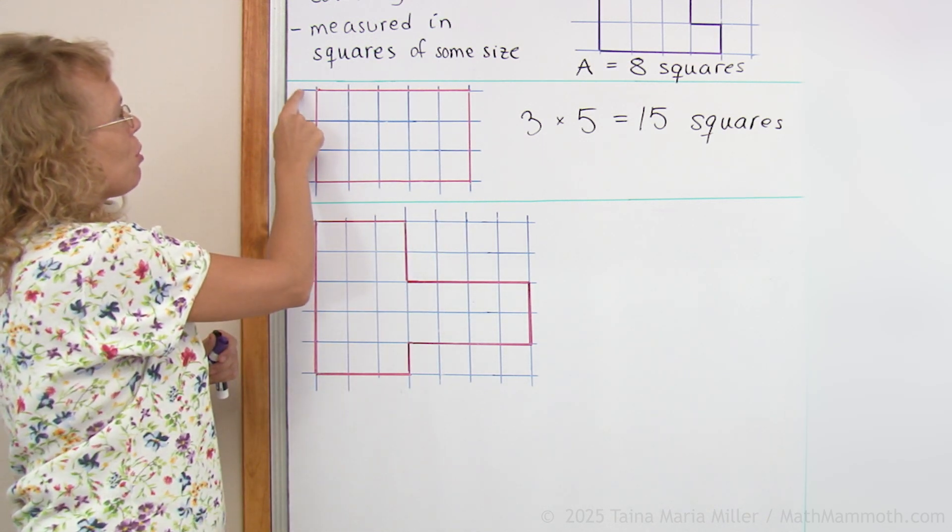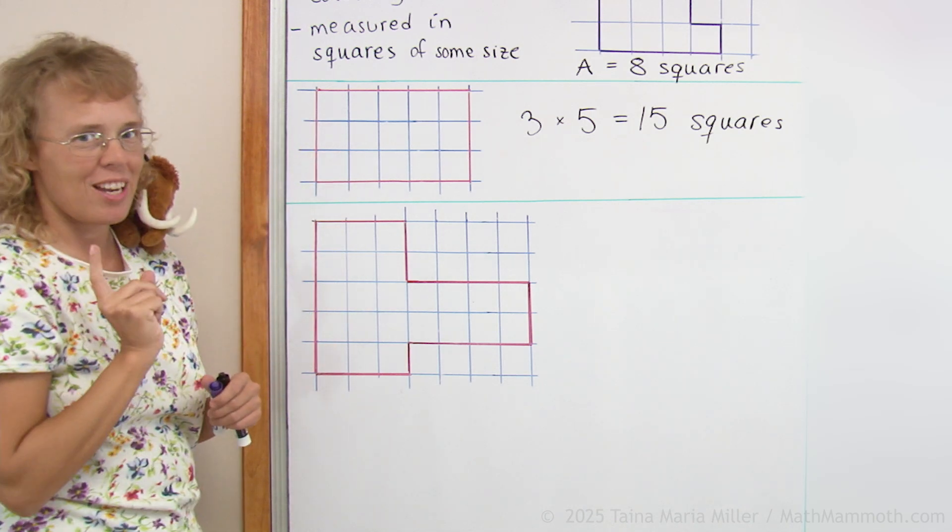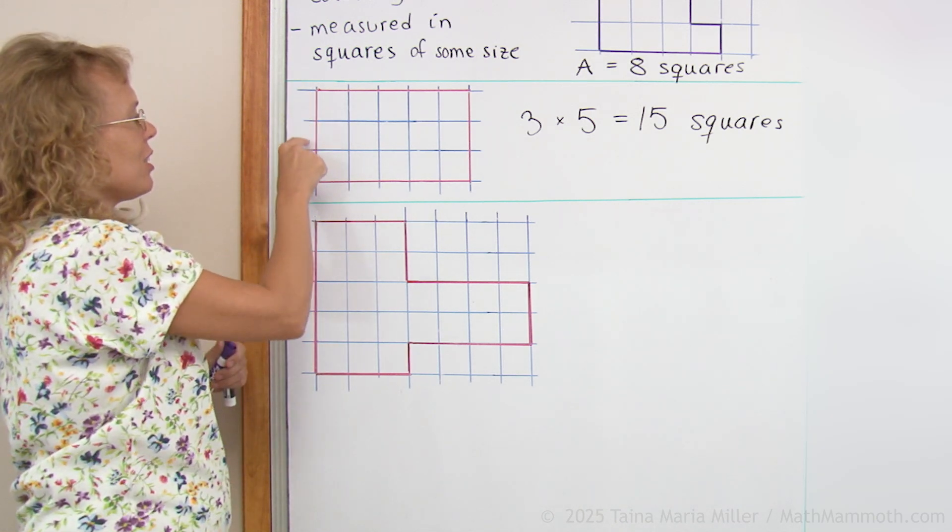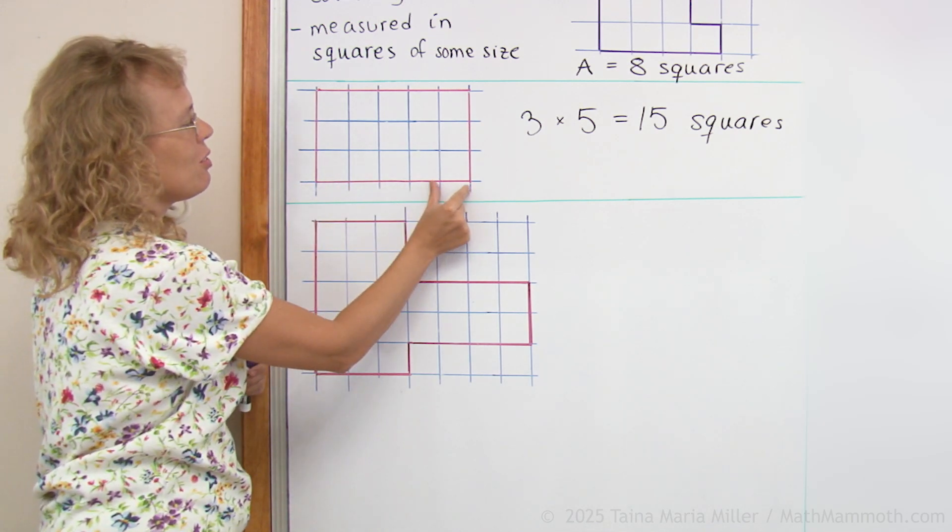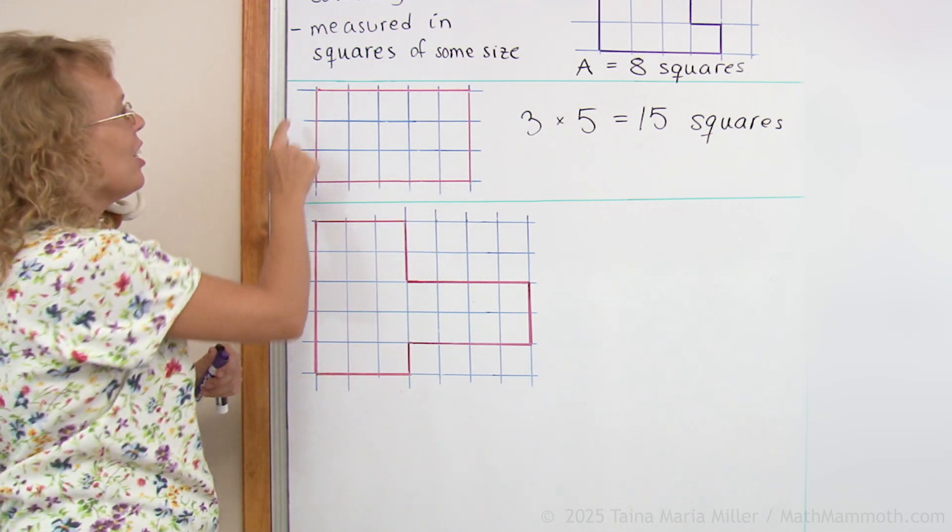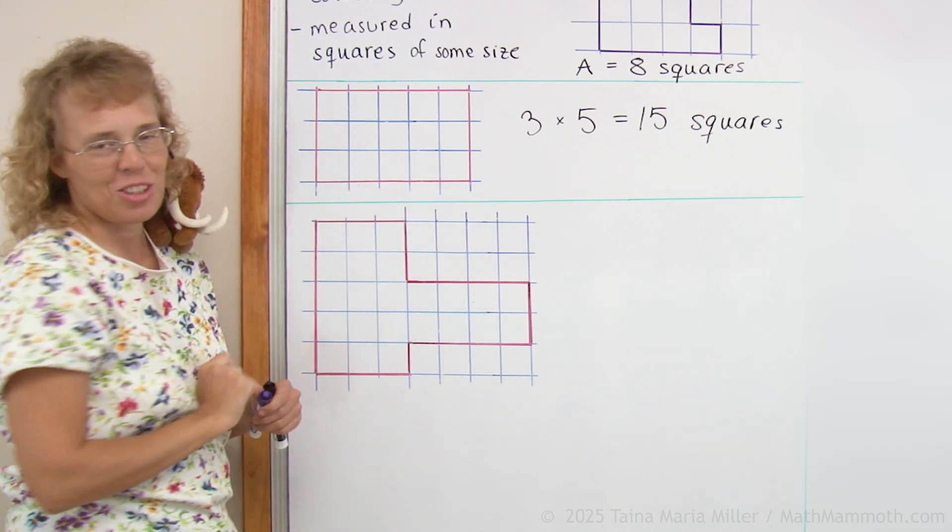Do not count these blue little lines here like 1, 2, 3, 4. Do not count those lines. Here's a unit, unit, unit. 3 units times unit, unit, unit, unit, unit. 5 units, okay? Or 3 rows and 5 columns.